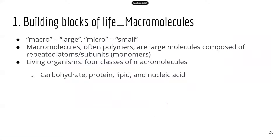Now let's look at some of the basics. "Macro" means large, so life is made up of macromolecules, and these macromolecules are usually big molecules — that's why we name them with "macro." Now "micro" means small. For example, microorganisms are organisms that are so small you can't usually see them with your naked eyes — you have to use some kind of instrument such as a microscope to be able to see them.